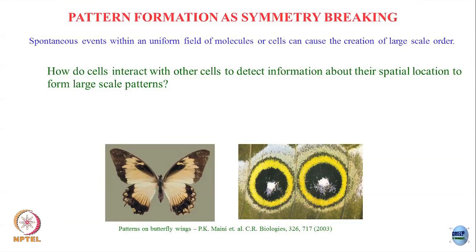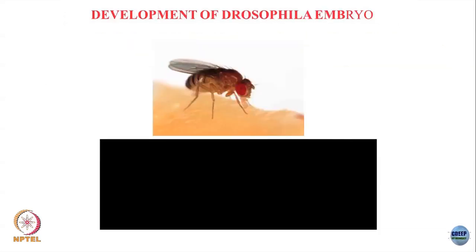Turing's reaction-diffusion systems have been used to study various patterns — for example, patterns on butterfly wings is a relatively recent paper where through the use of the equations that we will look at today, you can sort of explain these macroscopic patterns. Let me start, before I go into the generic theory, by taking the specific example of development of Drosophila.